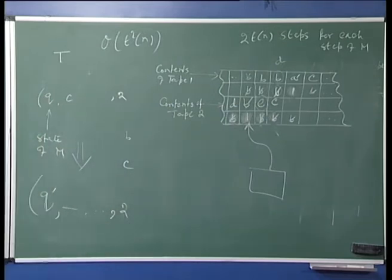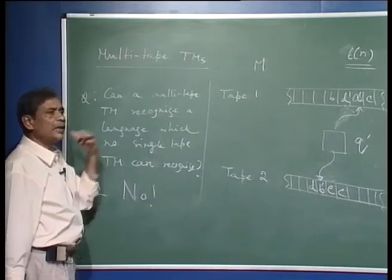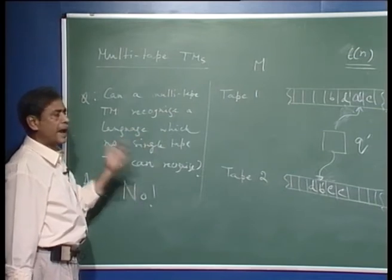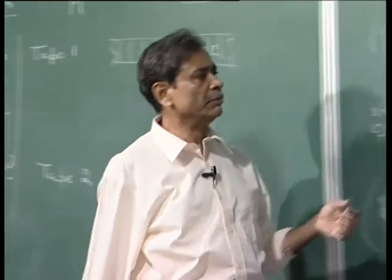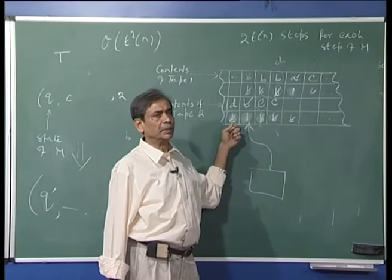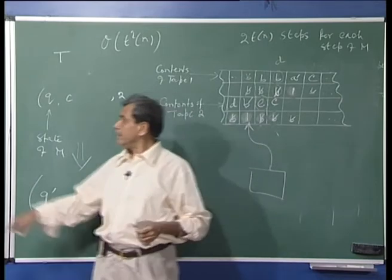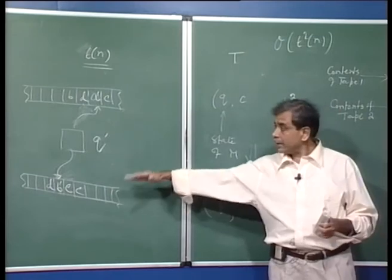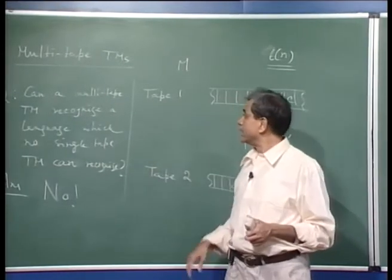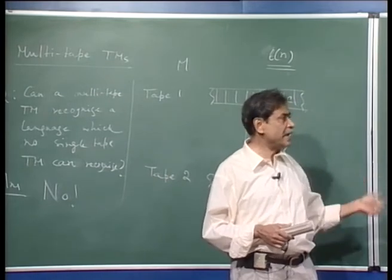This completes our discussion that multi-tape Turing machines can be simulated by a single-tape Turing machine. Therefore, having multiple tapes does not add extra recognition power over machines with only a single tape, and our basic model is robust. Although having multiple tapes can be convenient for designing algorithms, it is not essential — if pressed, you can do it with a single tape. Our next topic is non-deterministic Turing machines.